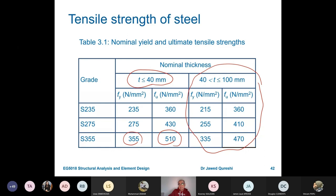You can see that yield and ultimate are less when the thickness of the section is more than 40. The reason is that there are stress concentrations and residual stresses. When the sections become thick, they trap lots of residual stresses. As a result, yield is reduced.